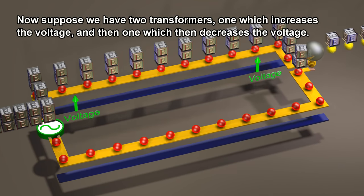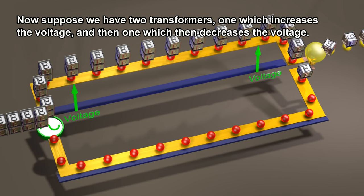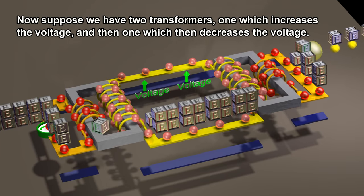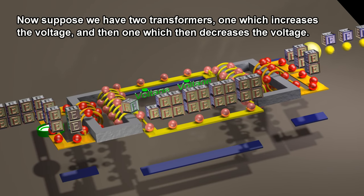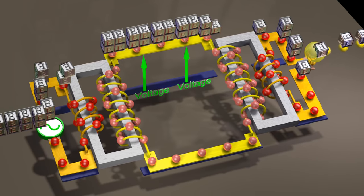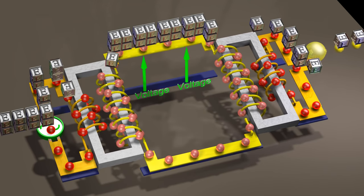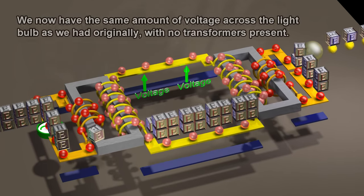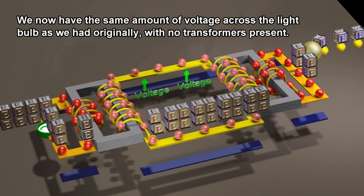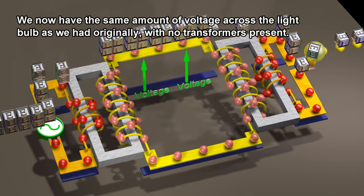Now suppose we have two transformers, one which increases the voltage, and then one which decreases the voltage. We now have the same amount of voltage across the light bulb as we had originally, with no transformers present.